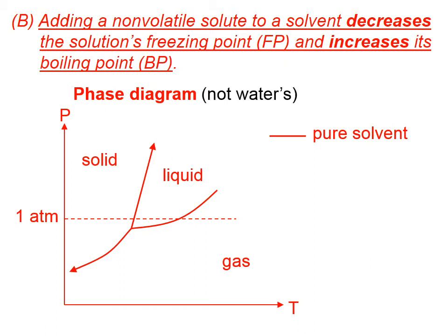This phase diagram is clearly not the phase diagram of water, because the solid-liquid line — which you can see right here — seems in this diagram to point in the 1 o'clock direction. If this were the phase diagram of water, that line would be pointing more towards 11 o'clock; in other words, it would lean to the left. On this diagram, at one atmosphere of pressure, between the solid and the liquid phase, this temperature that goes right down there is called the normal freezing point — the temperature at which it freezes at one atmosphere of pressure, also called the normal melting point.